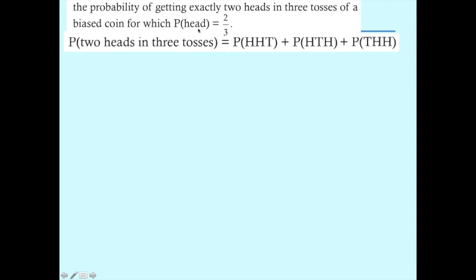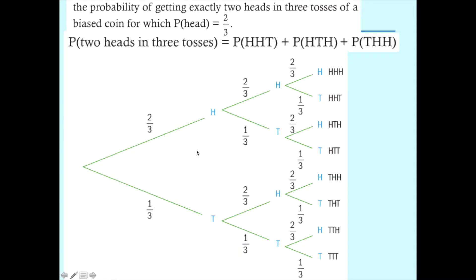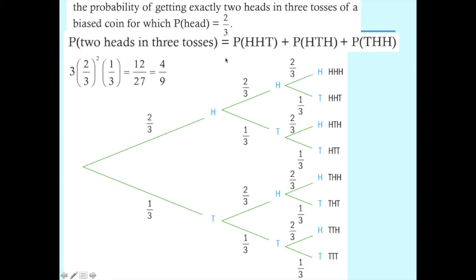You could do this intuitively by writing down all the combinations: head-head-tail, head-tail-head, and tail-head-head. Even without knowing anything about the binomial distribution, you could use a tree diagram and calculate each of these probabilities. For instance, for the first combination: head (two-thirds) times head (two-thirds) times tail (one-third). These other two are just those numbers in a different order. So we've got three lots of two-thirds squared times one-third, which gives us an answer of four-ninths.